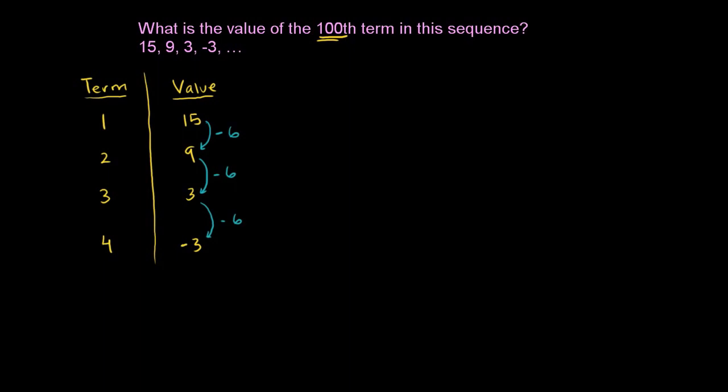Let me write this down. Notice, your first term, you have 15 and you don't subtract 6 at all, or you could say you subtract 6 zero times. So you could say this is 15 minus 0 times 6. That's what that first term is right there.